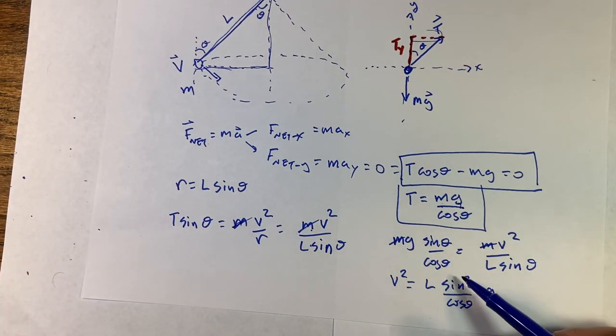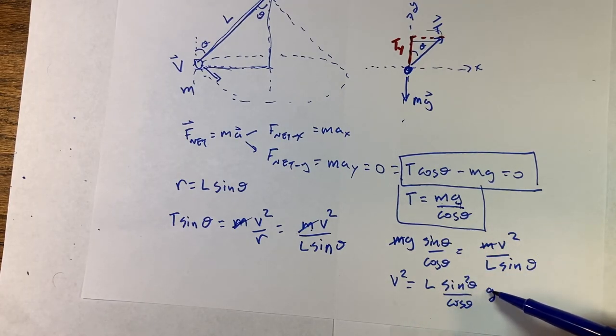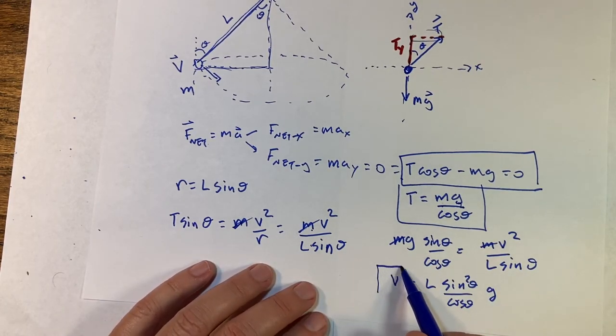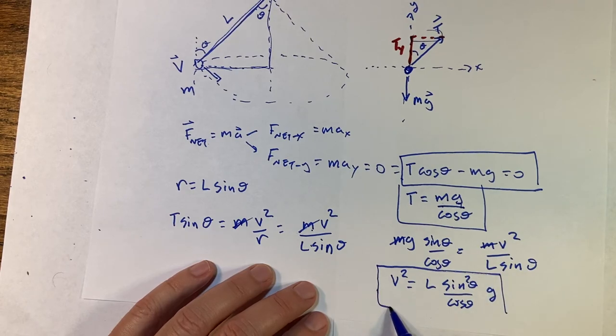Now does that even make sense? So this is going to have no units right here. This is meters per second squared times meters. So I get meters squared per second squared. So that is velocity. So that is a good relationship between those two things.